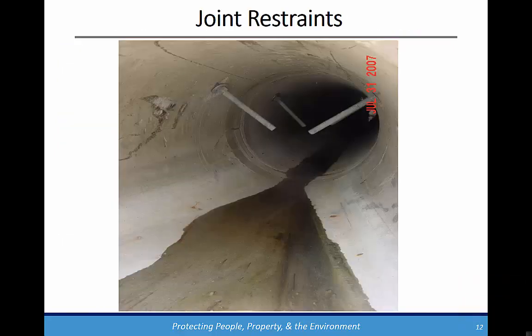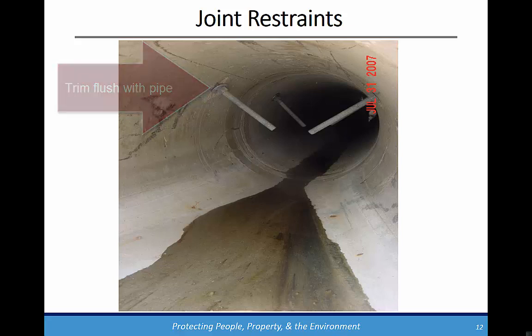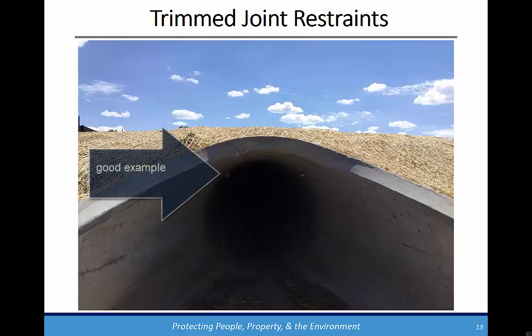Joint restraints are the last component for inspection. Joint restraints are typically installed between the flared end section and the upstream section or two of pipe. All joint restraint threads must be trimmed flush with the interior bolts. This ensures that the bolts will not be a hydraulic obstruction or collect debris which would reduce pipe capacity. We recommend that the threads be trimmed prior to installation for smaller pipes, typically those that are 24 inches or less. Here is an example of properly installed and trimmed joint restraints.